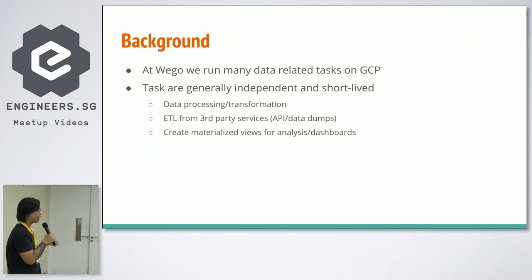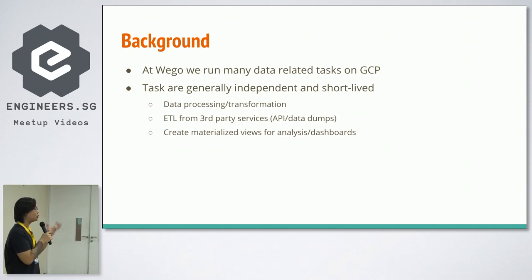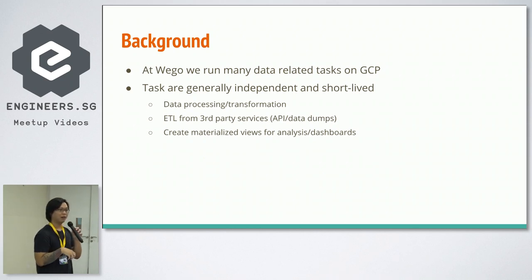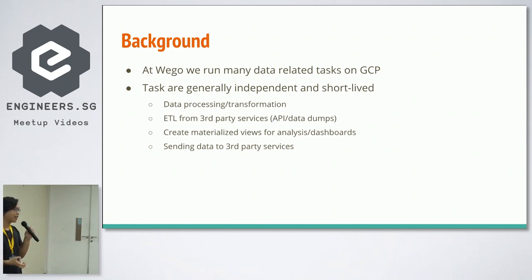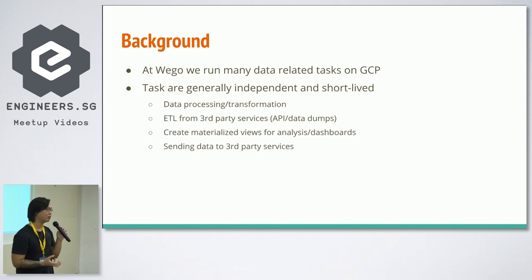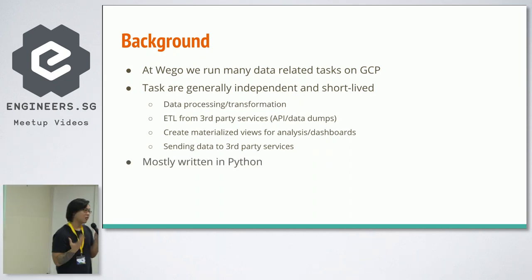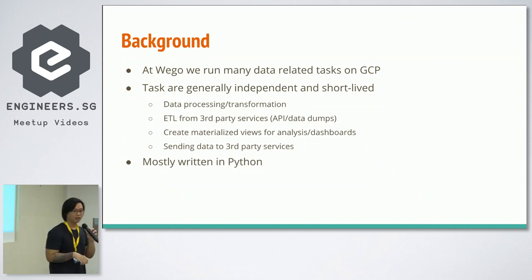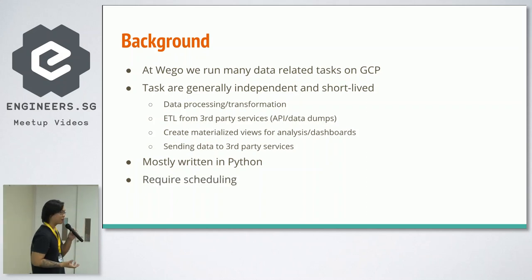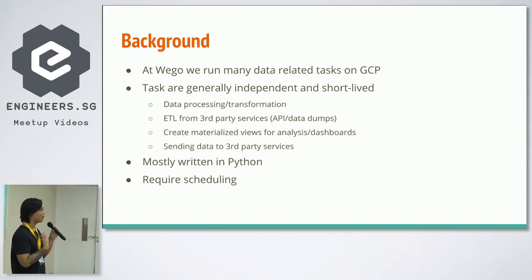On BigQuery, we can query raw data and create resulting tables from that, which we use directly with our visualization tools to display for business people. Sometimes we also send data to third-party services. All these tasks are very independent, handle a lot of different things, and need to be quite flexible. The common point is that they're mainly written in Python, and they require scheduling — for example, a cleaning script that runs once every day or once every hour. Sometimes they also require credentials, such as when making a call to an API.